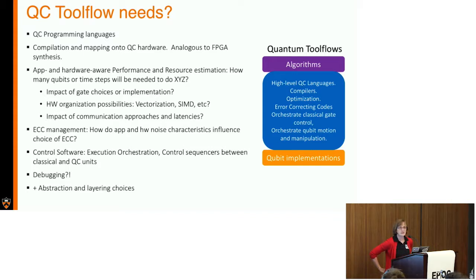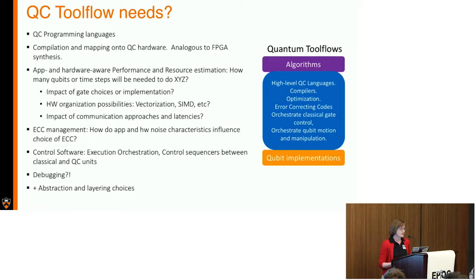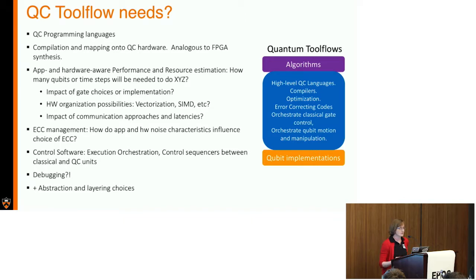What do we actually need in terms of quantum computing tool flows? We need quantum computing programming languages—some have been developed and we can reexamine them. We also need support for compilation and mapping onto quantum computing hardware, which right now is analogous to FPGA synthesis: you know your inputs and map and optimize as best you can. We also need performance and resource estimation for machines that don't exist yet. Over the past 10 years I've worked on quantum, I'm often asked: why would an architect work on quantum?